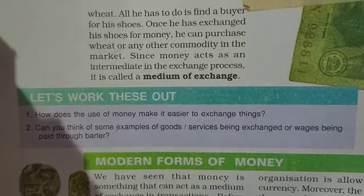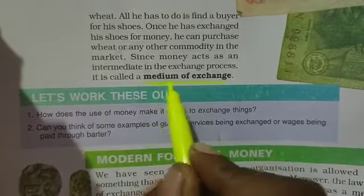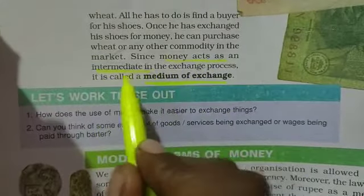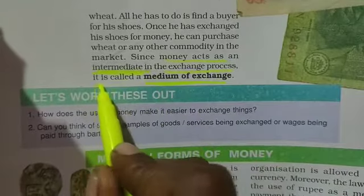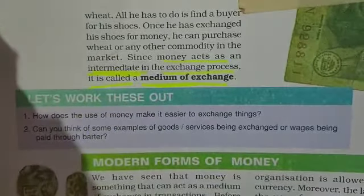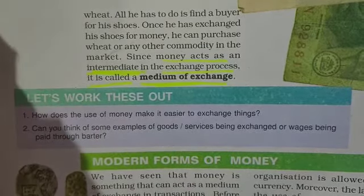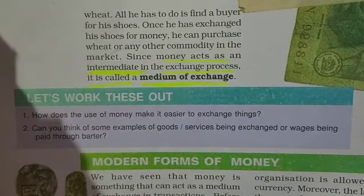Since money acts as an intermediate in the exchange process, that is why we call it a medium of exchange. Money acts as an intermediate in the exchange process — that is why it is called a medium of exchange. In the next class, I am going to teach you about modern forms of money. Stay tuned to GJS. Thank you, and have a great day ahead.